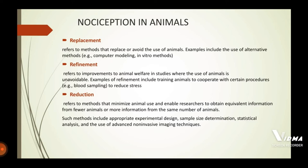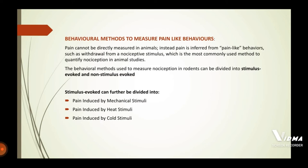Reduction methods include appropriate experimental design, sample size determination, statistical analysis, and use of advanced non-invasive imaging techniques. Behavioral methods to measure pain-like behaviors in rodents can be divided into stimulus-evoked and non-stimulus-evoked. Stimulus-evoked can be further divided into pain induced by mechanical, heat, or cold stimuli.